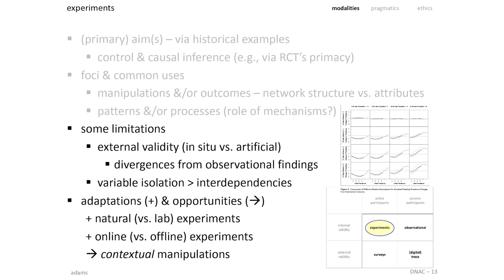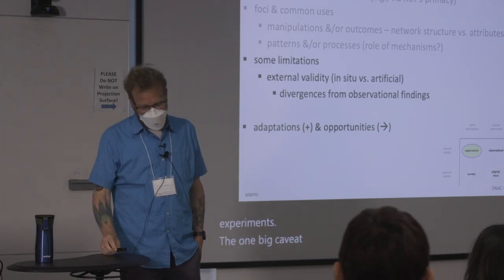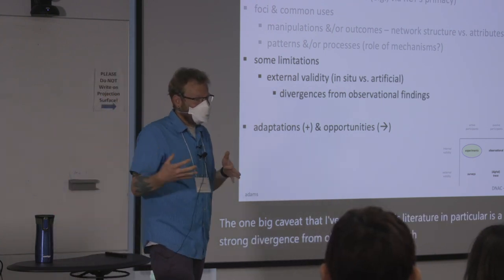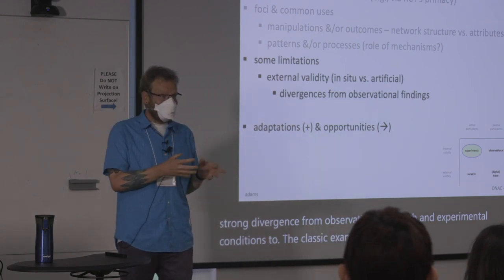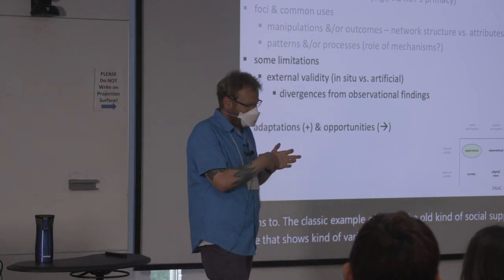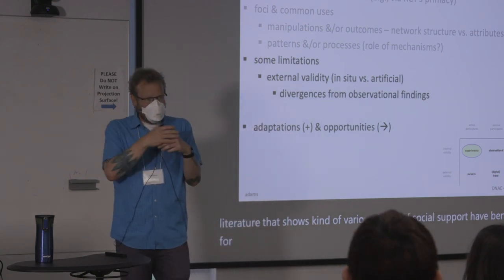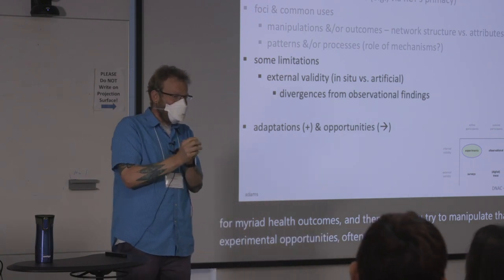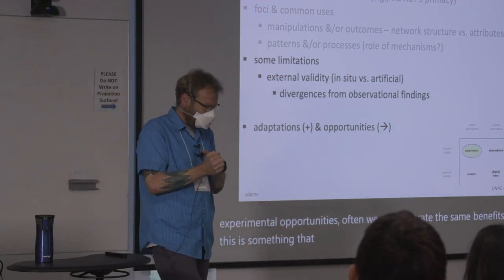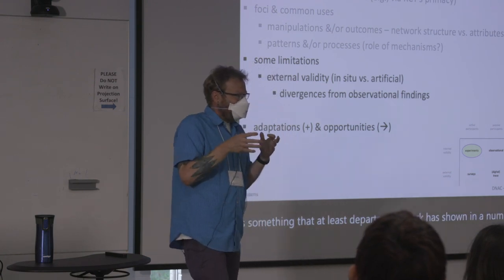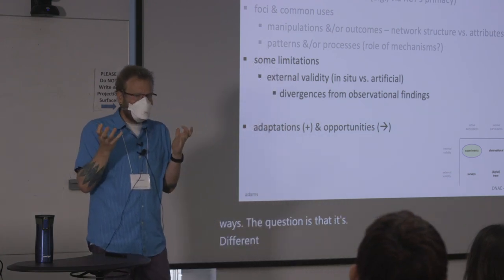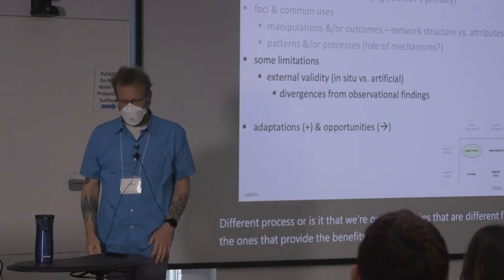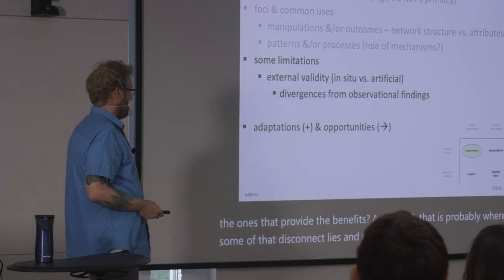One big caveat I've noticed in this literature is a strong divergence between observational research and experimental conditions. The classic example is the social support literature that shows various forms of social support benefit myriad health outcomes — but when you try to manipulate that experimentally, often you can't generate the same benefits. Lisa Berkman's work has shown this in a number of ways. The question is whether it's a different process or whether we're generating ties that differ from the ones that actually provide the benefits.